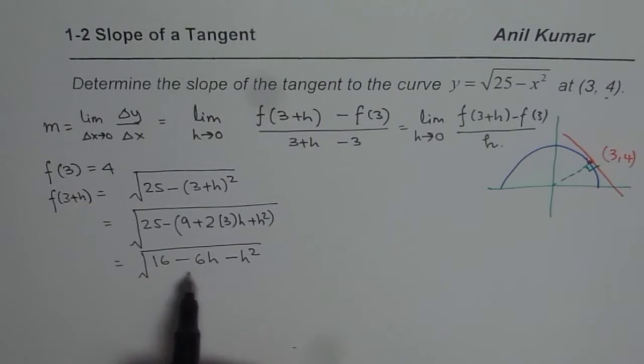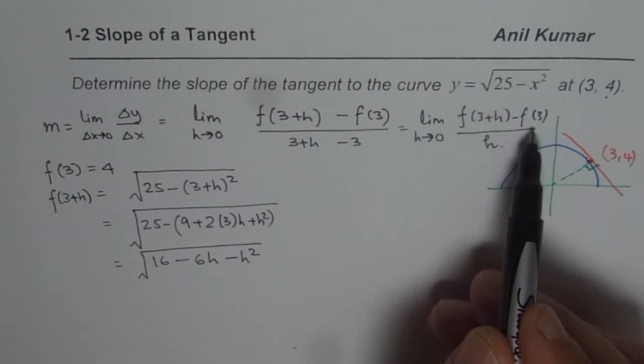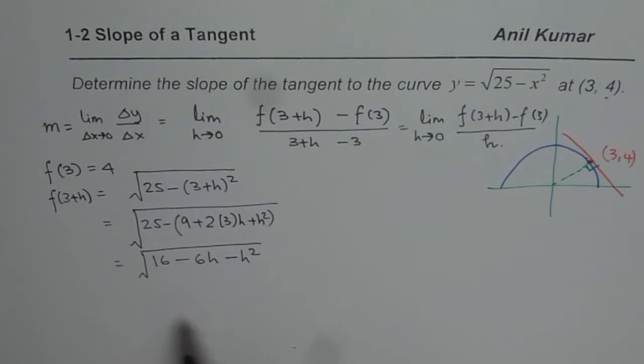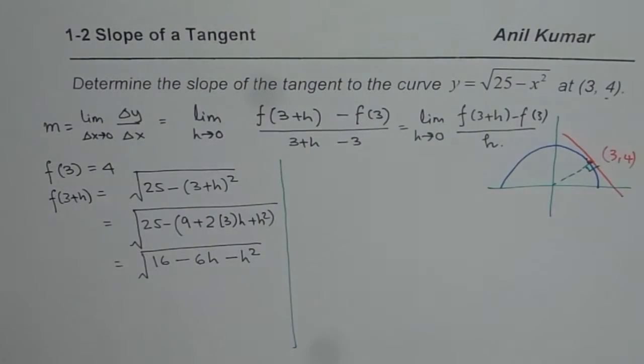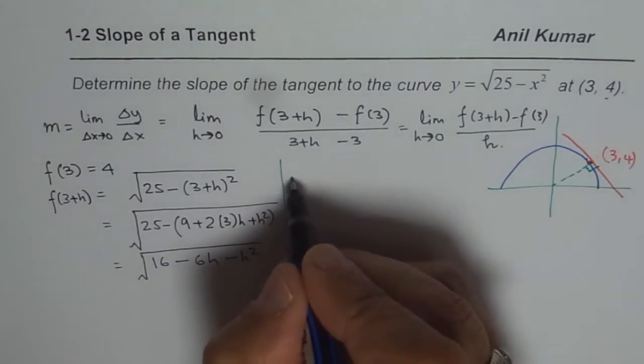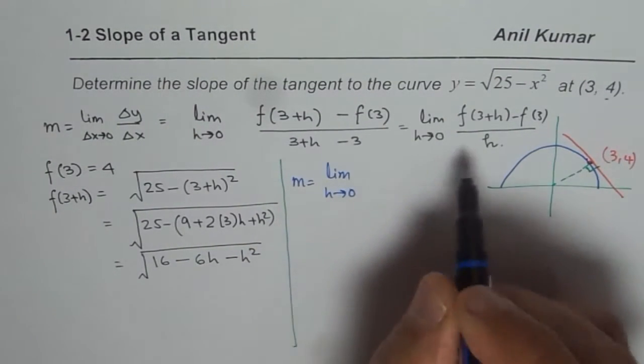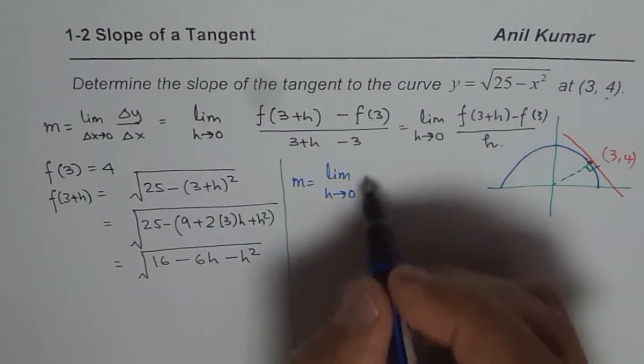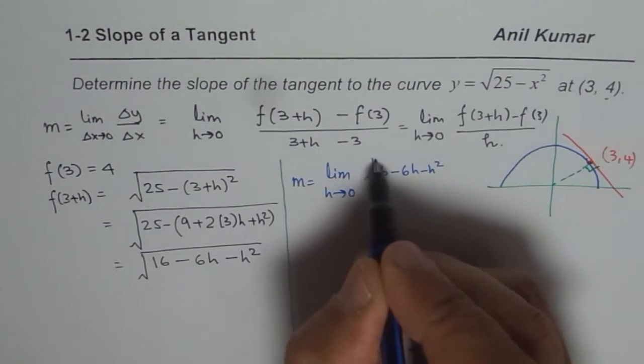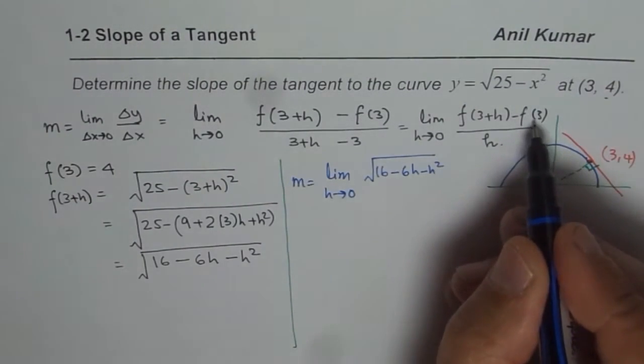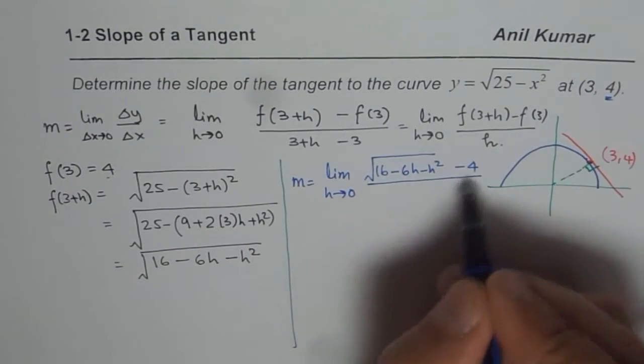Now we can substitute this value in our equation. f of 3 is known to us as 4. So we will do it on this side. So now we can write slope m equals limit h approaches 0, and f of 3 plus h is square root of 16 minus 6h minus h square, minus f of 3, f of 3 is 4, minus 4, divided by h.